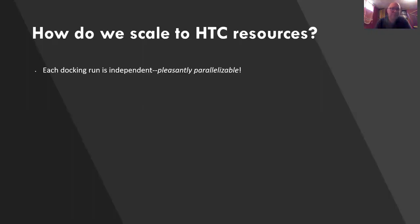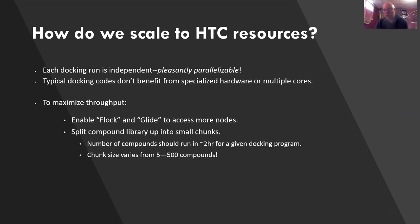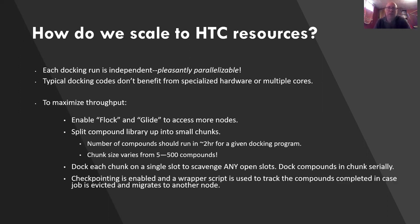How do we scale? Each molecule can be docked independently, so it's pleasantly parallelizable. Typical codes don't benefit from special hardware like GPUs, so we're good using CPU cores. To maximize throughput, we enable Glide to access more nodes and get onto OSG. We split the compound library into chunks, scaling chunk size to run in under two hours on a single core — chunk size can vary from 5 to 500 compounds depending on the program. Each chunk is docked on a single node, so we can scavenge any open nodes.